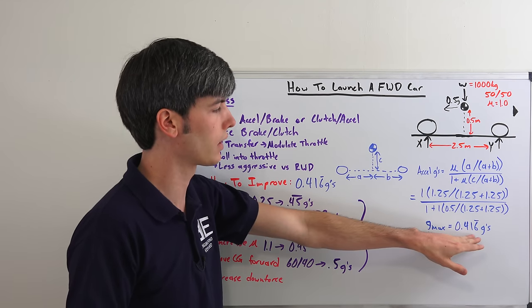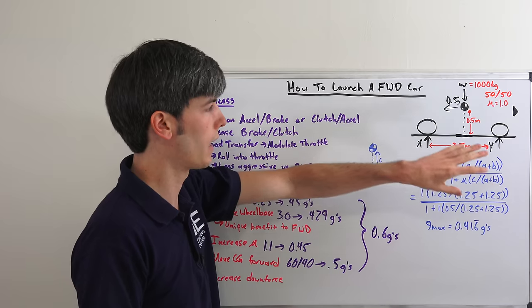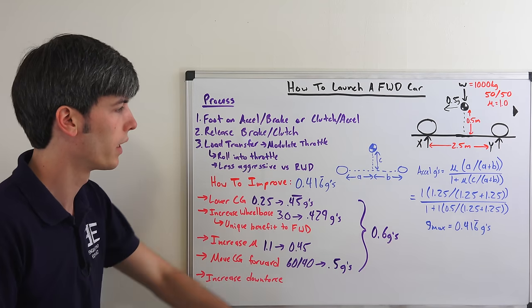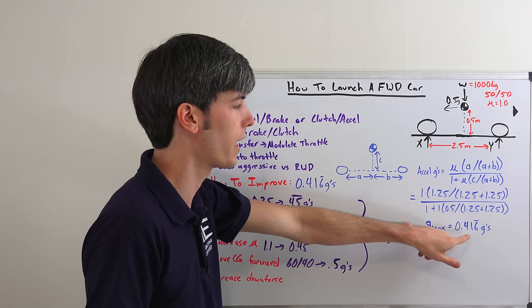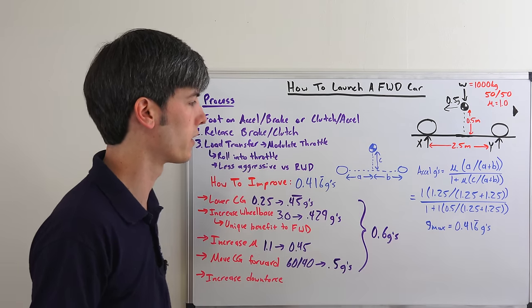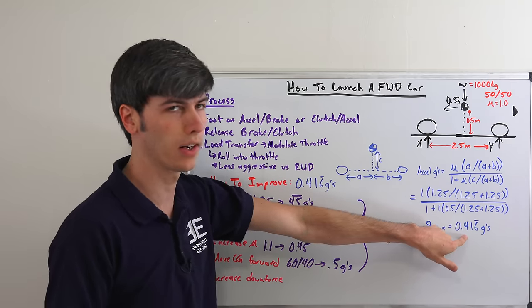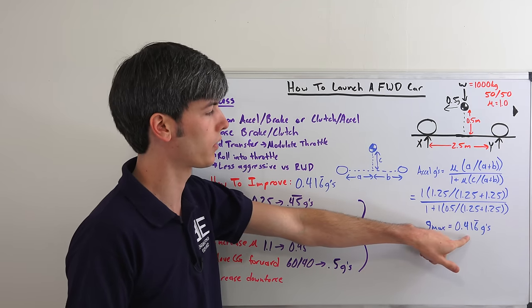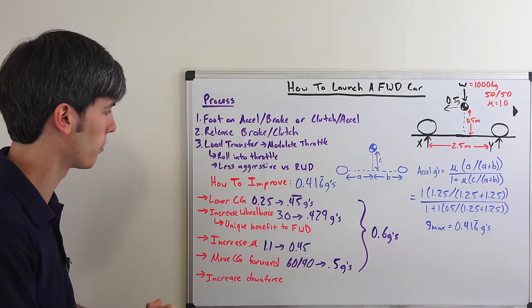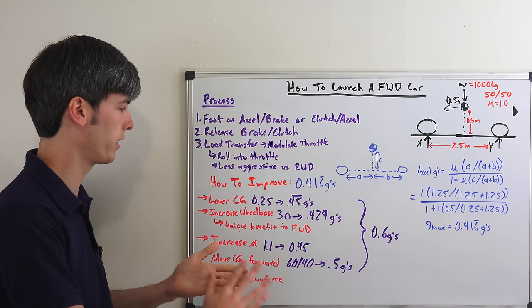Based on the grip of the tires. Now this is assuming we have plenty of power in order to accelerate, but this isn't really that high of a number. So it would be fairly easy to exceed that and then spin the tires. So you want to increase this number. How do you increase the maximum acceleration possible of a front-wheel drive vehicle assuming you have the power? You just don't have the grip. Well, here's our five methods right here.